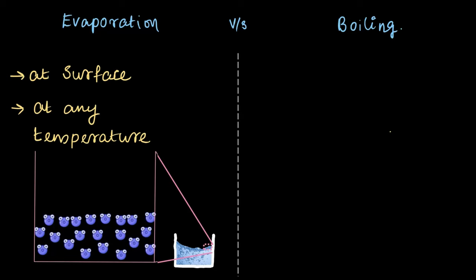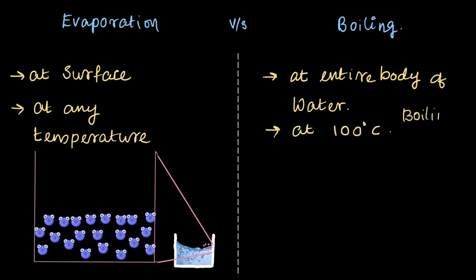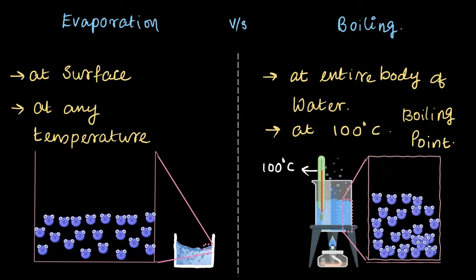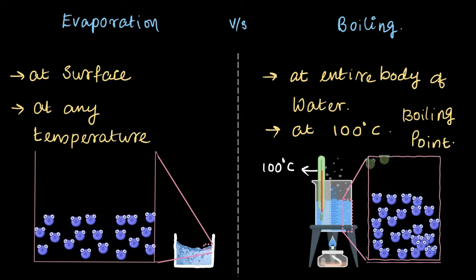Boiling, on the other hand, is when molecules escape from the entire body of the water. When water reaches 100°C — called the boiling point — water molecules have no choice but to turn into steam, and it happens throughout the entire bulk of the water. But in evaporation, only a few molecules at the surface escape at a time depending on conditions. So even though the air isn't at 100°C, evaporation still allows water molecules to turn into vapor at lower temperatures.